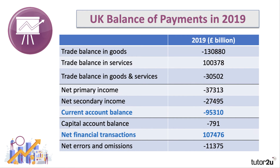Here's the data for the UK balance of payments in 2019. We ran a trade deficit in goods and services of just over £30 billion. Our net primary income and secondary income was again negative. The capital account is actually tiny and can largely be ignored from the point of view of understanding the balance of payments. Net errors and omissions is essentially there to pick up the hard bits of calculating all these flows across countries — there are inevitably errors in the calculations.